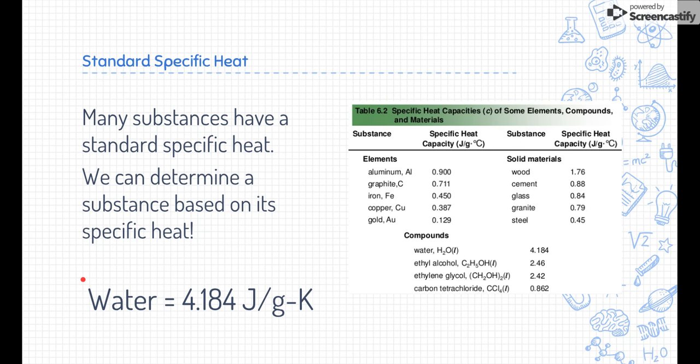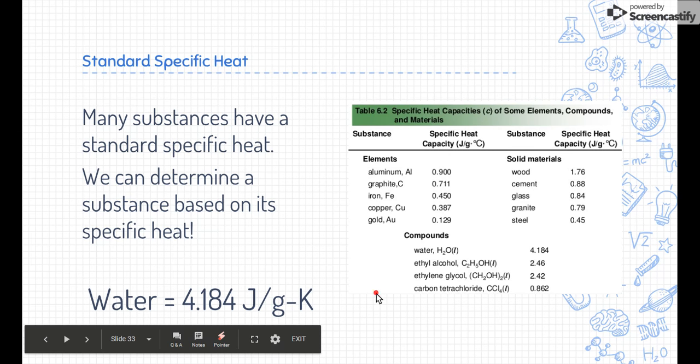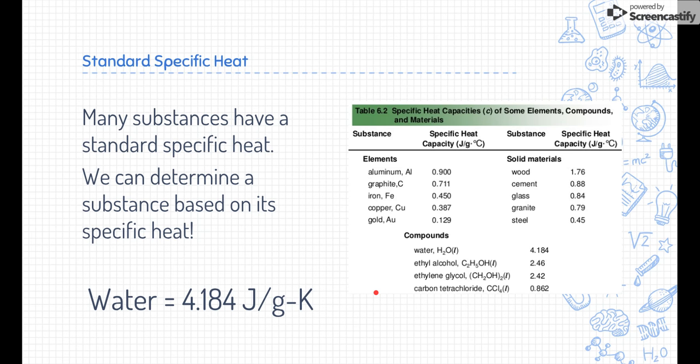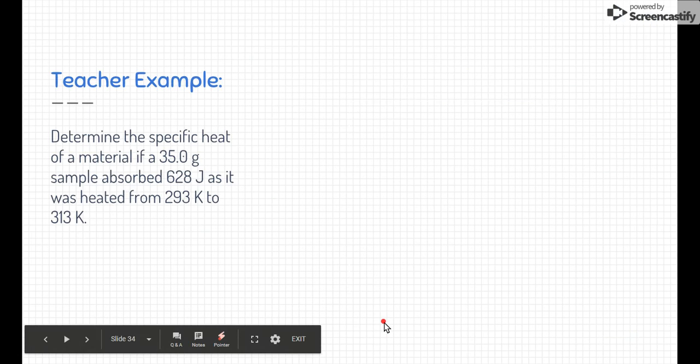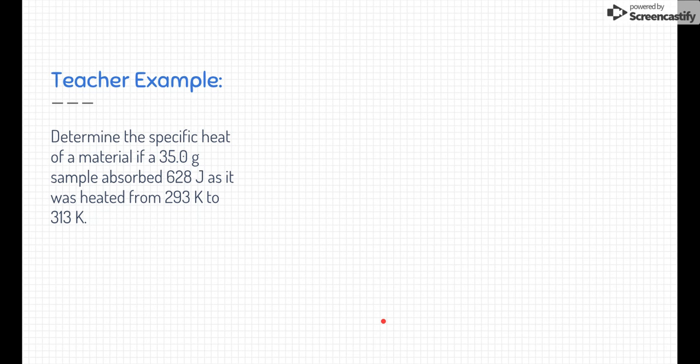And we can determine a substance based on specific heat by using tables. If we figured out the specific heat of something, we can look up the table and see what substance it is. All right, let's get to a teacher example. It says, determine the specific heat of material if a 35 gram sample absorbs 620 joules when it was heated from 293 Kelvin to 313 Kelvin.